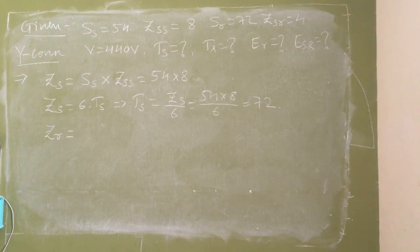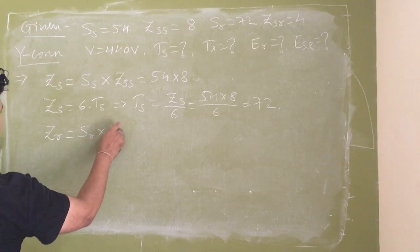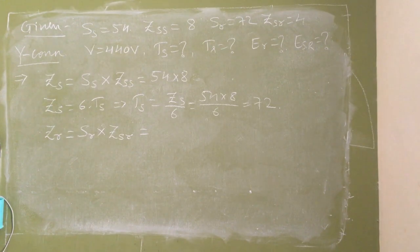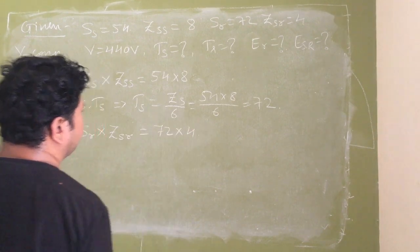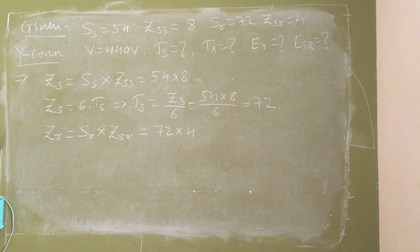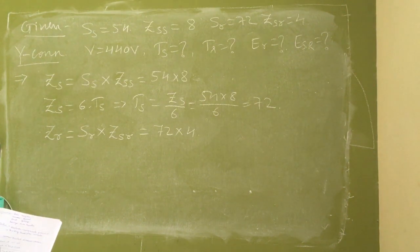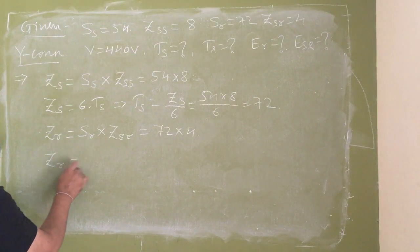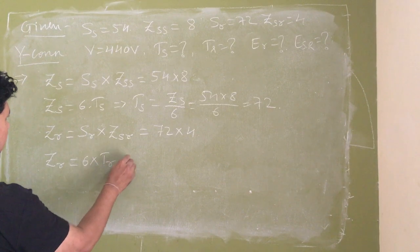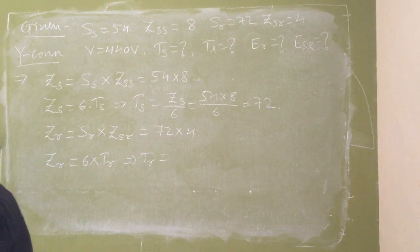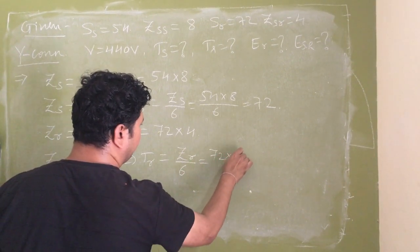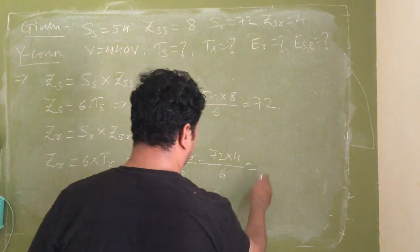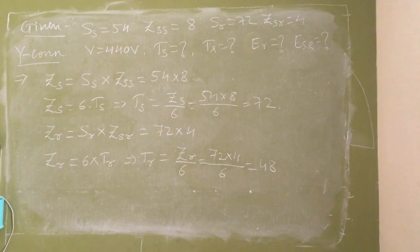Rotor conductors ZR = rotor slots × rotor conductors per slot = SR × ZSR = 72 × 4. Similarly, ZSR = 6 × TR, so TR = ZR / 6 = (72 × 4) / 6 = 48. So the number of rotor turns per phase is 48.